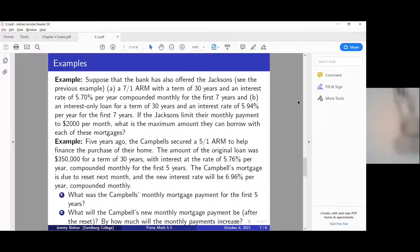And an interest-only loan for a term of 30 years and an interest rate of 5.94% per year for the first seven years. If the Jacksons limit their monthly payment to $2,000 per month, what is the maximum amount they can borrow with each of these mortgages?